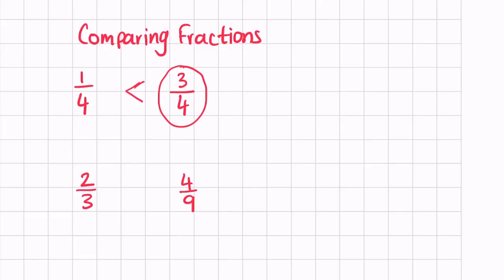On the second example we have two thirds and four ninths. Now we can see the denominators are different, so we need to make the denominator the same first. We will need to find an equivalent fraction. If you haven't watched the equivalent fractions video, please do check it out — I'll put the link on the top right and also in the description, as it will help you understand this lesson a bit better.